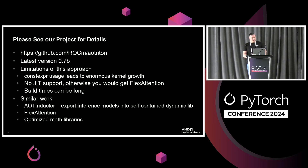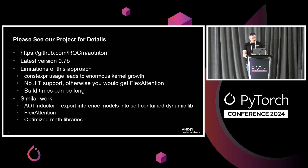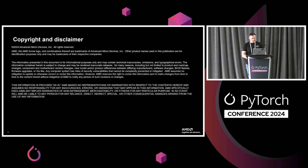Unfortunately, there are some drawbacks to this approach. There are a lot of kernels that can be generated. We could use just-in-time compilation to save on code object and shared library sizes, but at that point we basically get flex attention. The trade-off, though, is that we can highly tune all of these kernels — not to say flex attention doesn't have good performance, but we believe we can achieve more through AO Triton. Today, AO Triton gives us full CI coverage in PyTorch, which was the whole reason for this approach. This gives us both SDPA coverage and memory-efficient attention in PyTorch eager mode, while also providing high-performance kernels. Thank you very much.